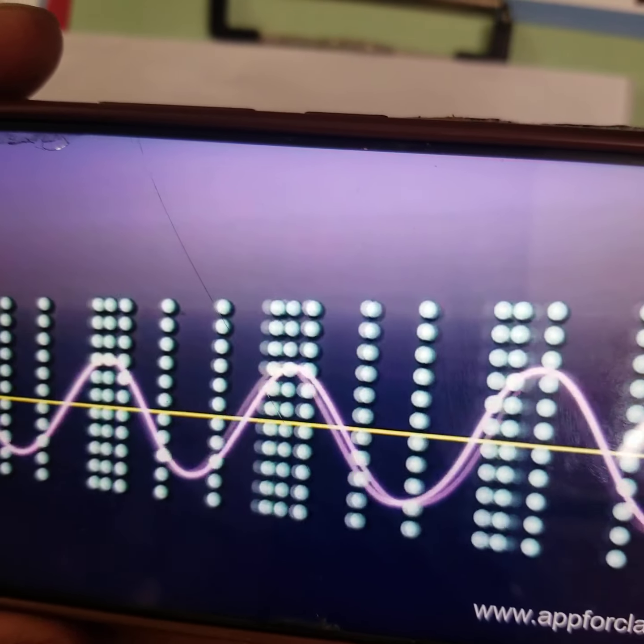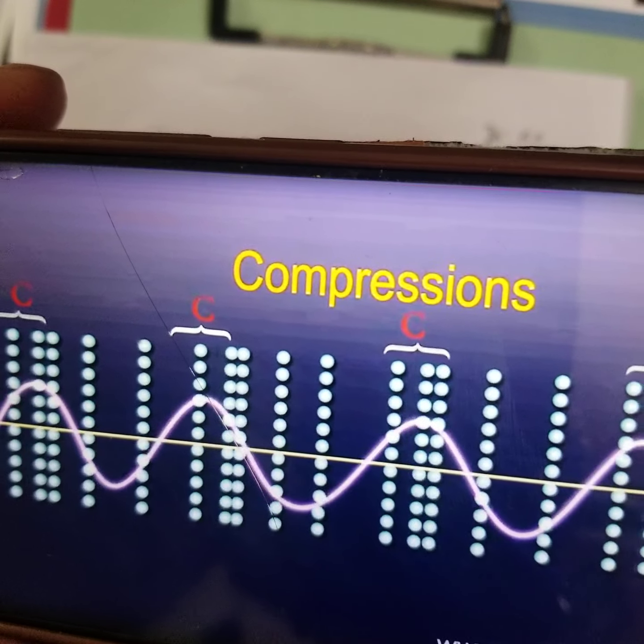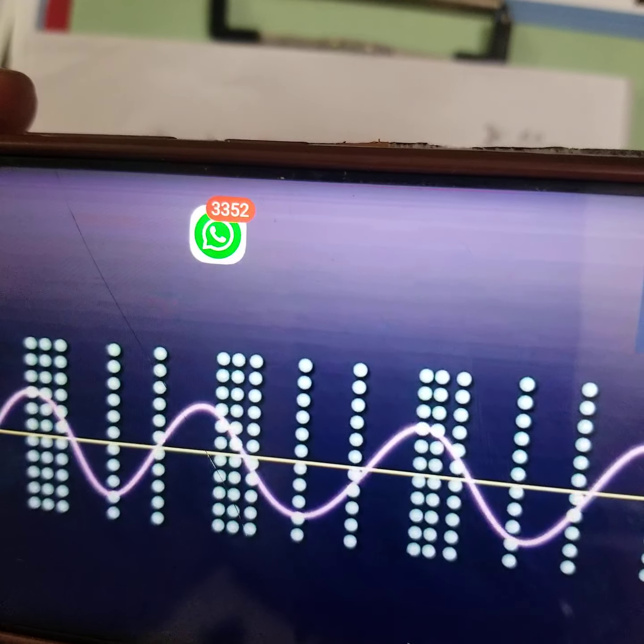What is transverse? Remember T. The wave is propagating in one direction but the particle is vibrating to and fro — they are perpendicular. That is why it is called a transverse wave.